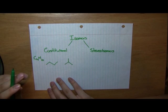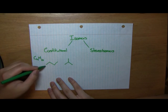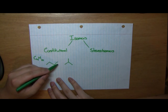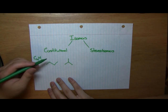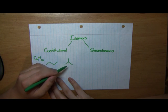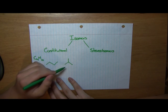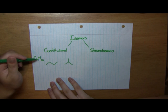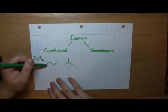So let's count the atoms here and make sure that they follow the molecular formula. Here we have 10 hydrogens and 4 carbons. So they follow the same molecular formula. However, they are obviously different molecules because they are non-superimposable on each other.